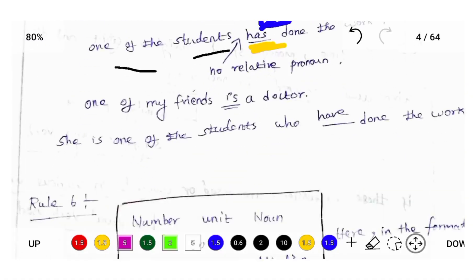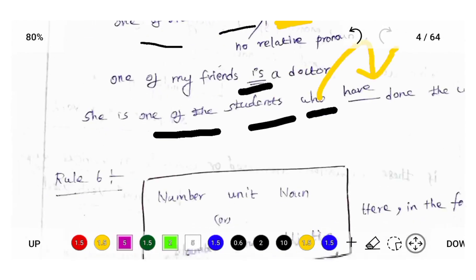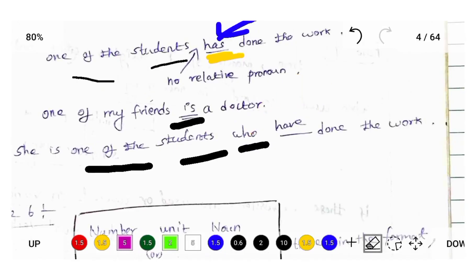'One of my friends is a doctor.' 'She is one of the students' — one of the followed by students, then followed by a relative pronoun, so we should use plural verb 'have'. She is one of the students who have done the exam.